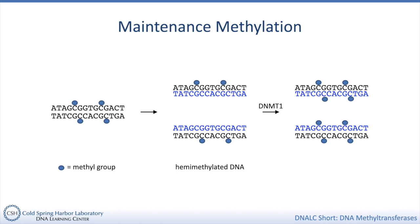The structure of the catalytic domain of DNMT1 allows it to make contact with the methylated cytosine on one strand, as well as the unmethylated cytosine that is paired with the G in the methylated CpG. This is the cytosine on the newly synthesized DNA that needs to be methylated. DNMT1 then adds a methyl group to the cytosine and moves on. In this way, DNMT1 methylates the newly replicated DNA so that it matches the original double-stranded DNA.